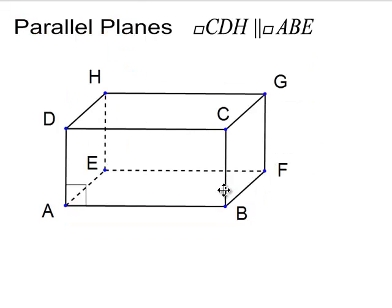Parallel planes. This plane on the top, CDH, appears to be parallel to the plane down below, ABE.